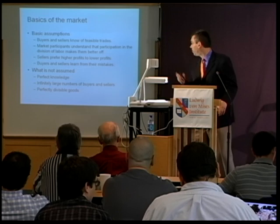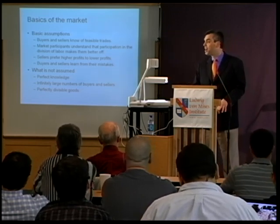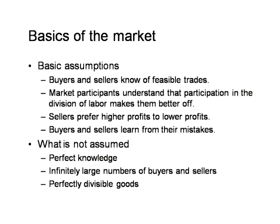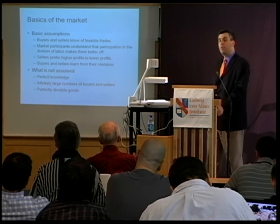Our assumptions about people's abilities are pretty mild. We're not making any strong assumptions about, for example, perfect knowledge, as in the textbook model of perfectly competitive general equilibrium, where all agents are perfectly informed about all other agents and all feasible trades. We're not assuming infinitely large numbers of buyers and sellers, nor are we assuming goods and services are infinitely divisible. You won't see any partial derivatives today — not only is there no need to apply the calculus notion of infinitely small adjustments, but doing so would be illegitimate in the world of real action, because human agents think in discrete terms. You think about buying a Coke or an automobile, not one nth of an automobile.